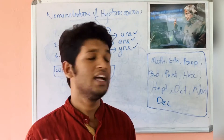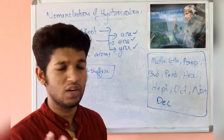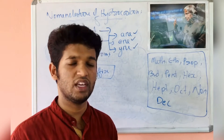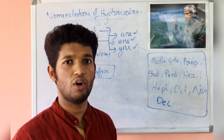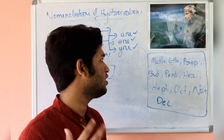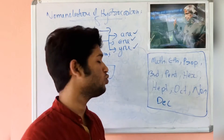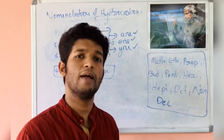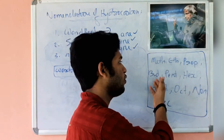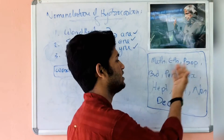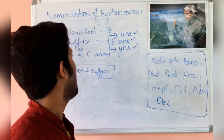There are ten word roots present with respect to carbon atoms. If there is one carbon atom in a compound, we will take 'meth' as the word root. If it is two, we will take 'eth', and if it is three, we will take 'prop' — respectively for four, five, six, seven, eight, nine, and ten as well.